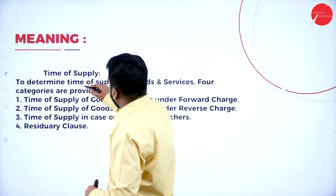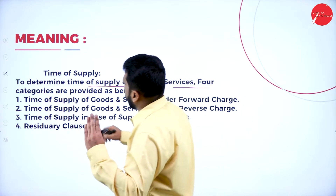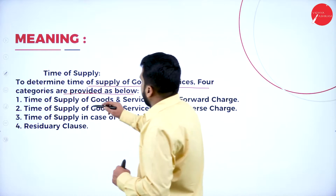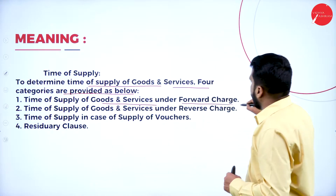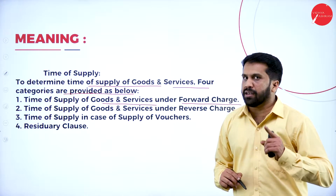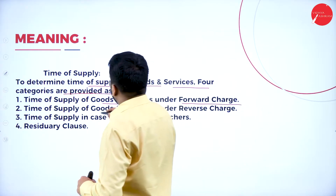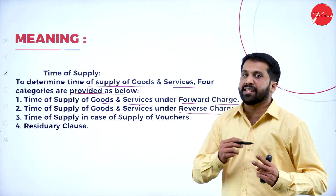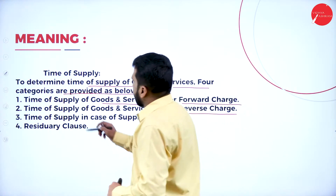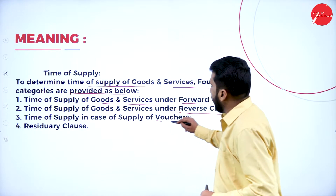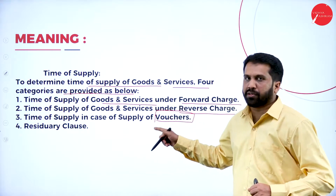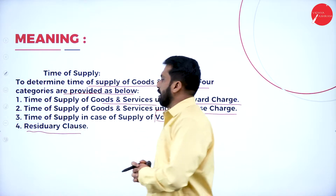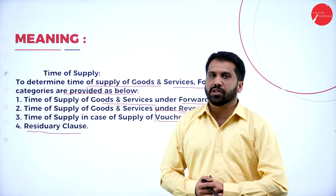To determine the time of supply of goods and services, four categories are provided. First: time of supply of goods and services under forward charge. Second: time of supply of goods and services under reverse charge. Third: time of supply in case of supply of vouchers. And fourth: residual class. These are the four things we are supposed to learn.